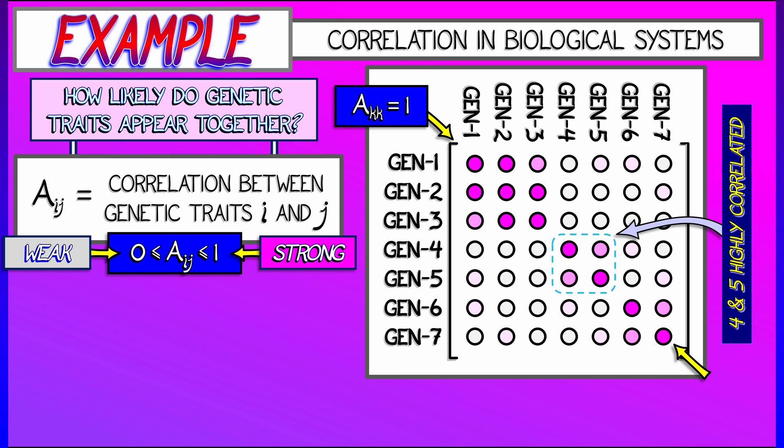In this simple example, you can see that traits four and five are highly correlated because of that 2x2 subblock of numbers close to one.